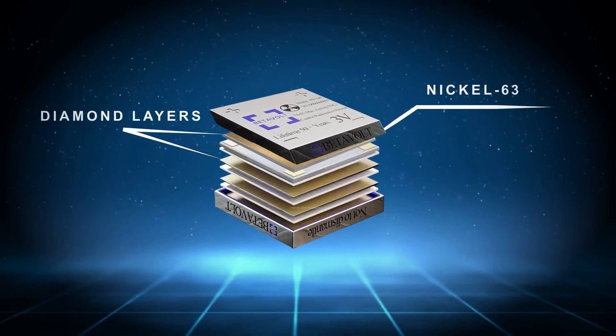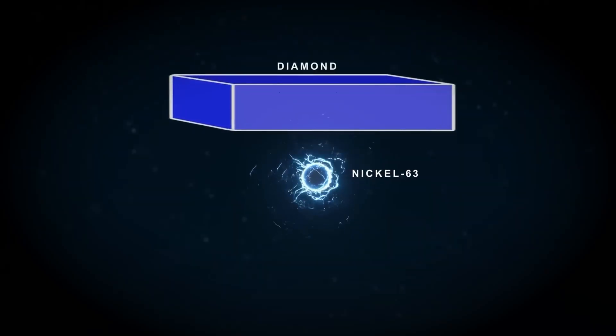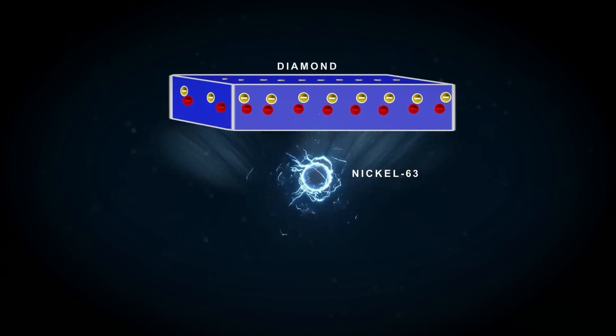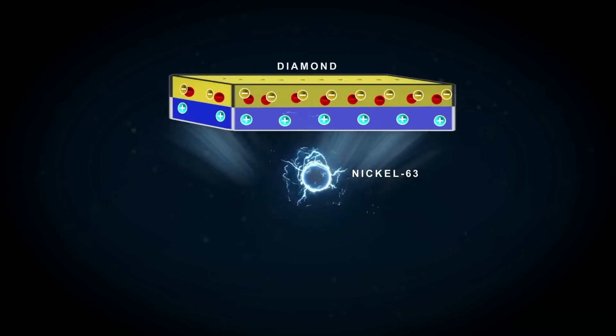How does it work? It contains a radioactive isotope of nickel, nickel-63, which is placed between two synthetically made diamond layers. When nickel-63 decays, it releases high-energy beta particles, or simply high-speed electrons. These electrons knock out electrons from the diamond atoms, causing them to be expelled.